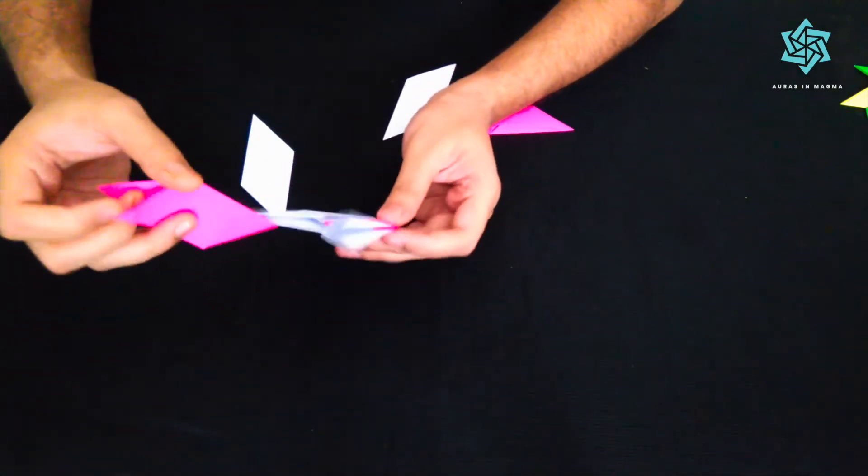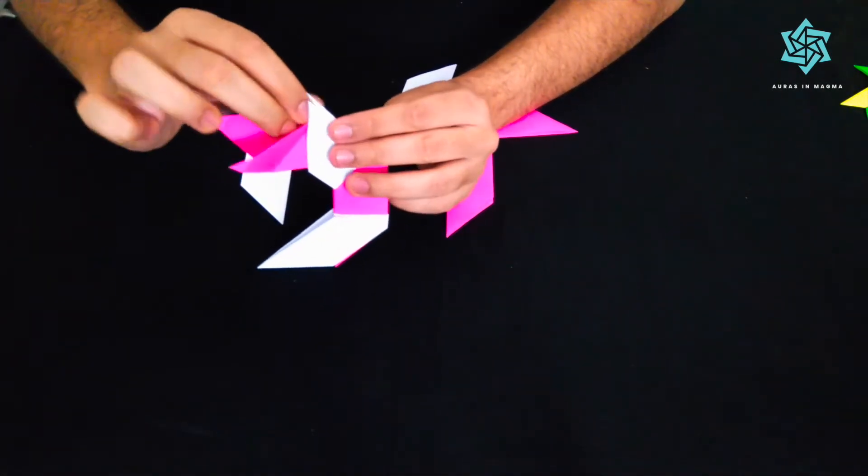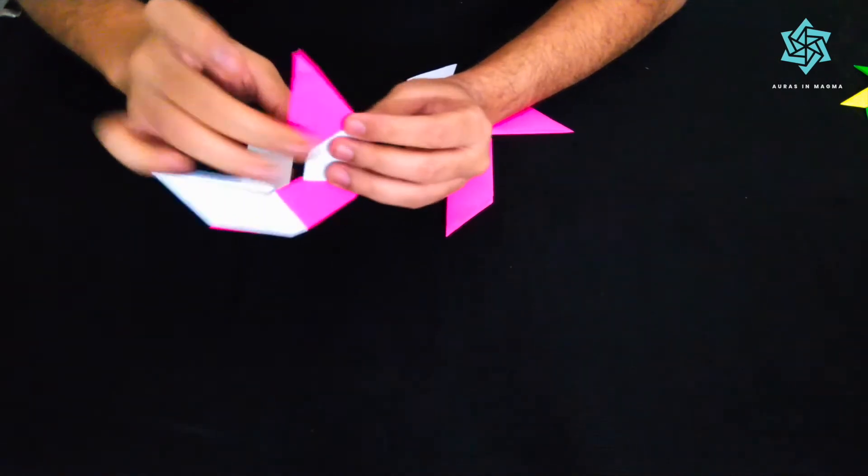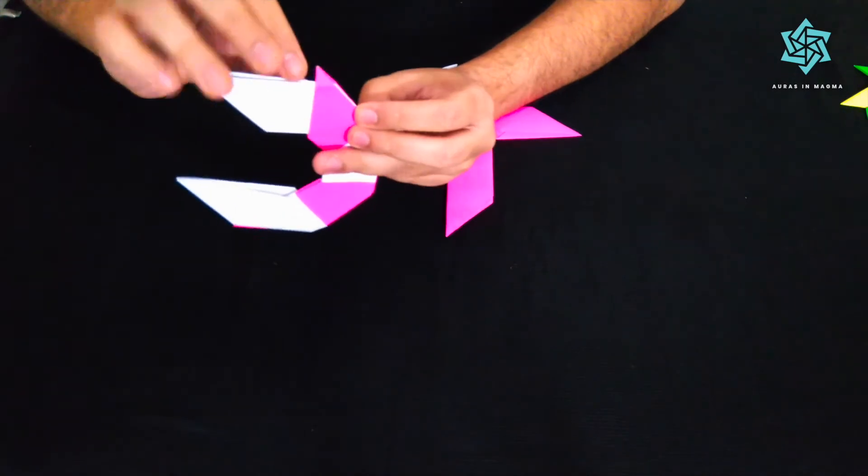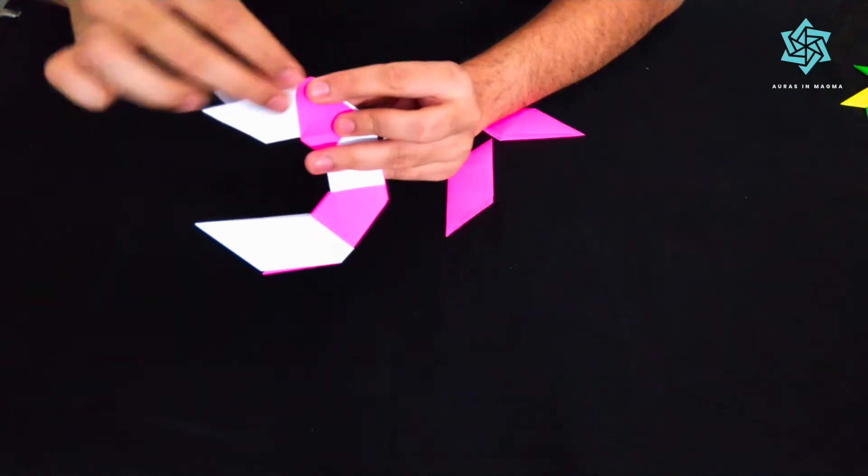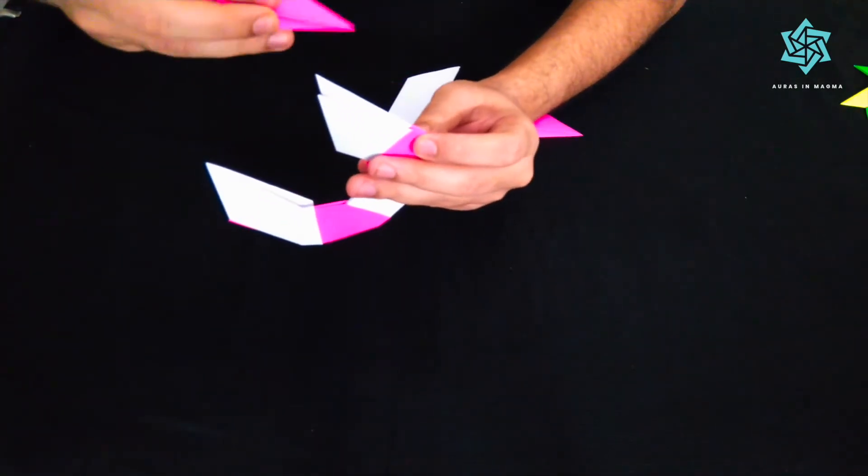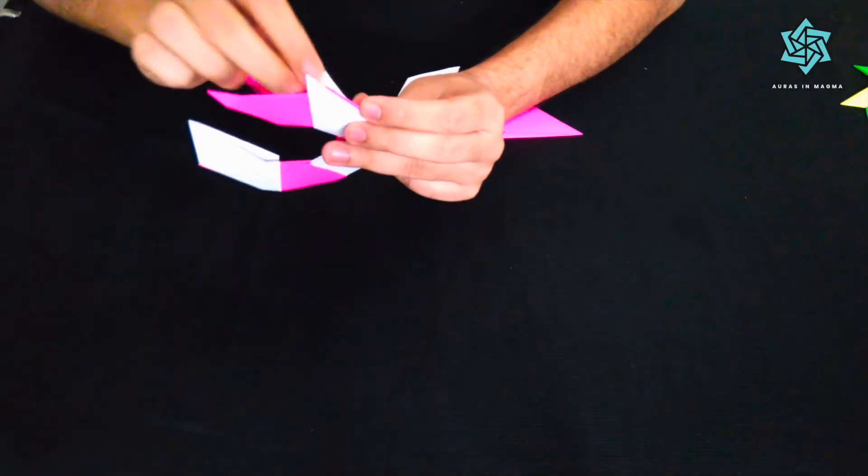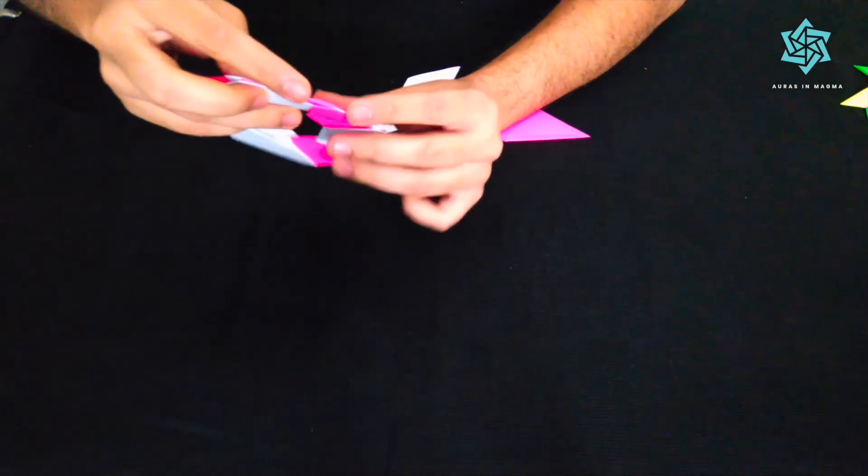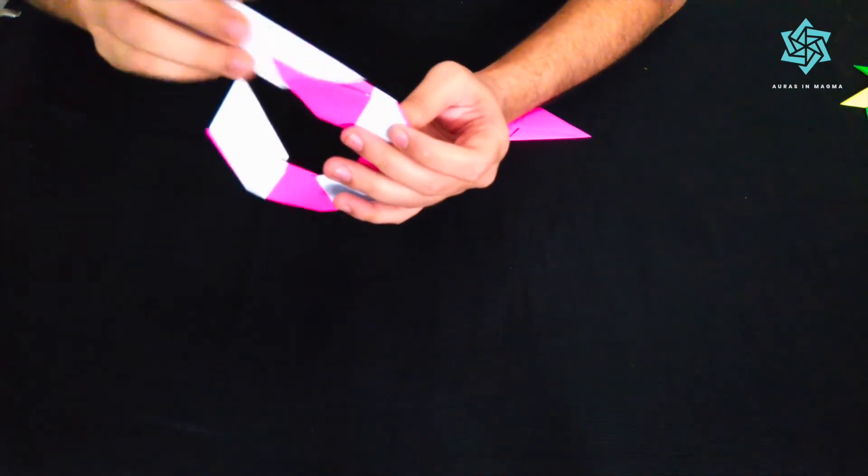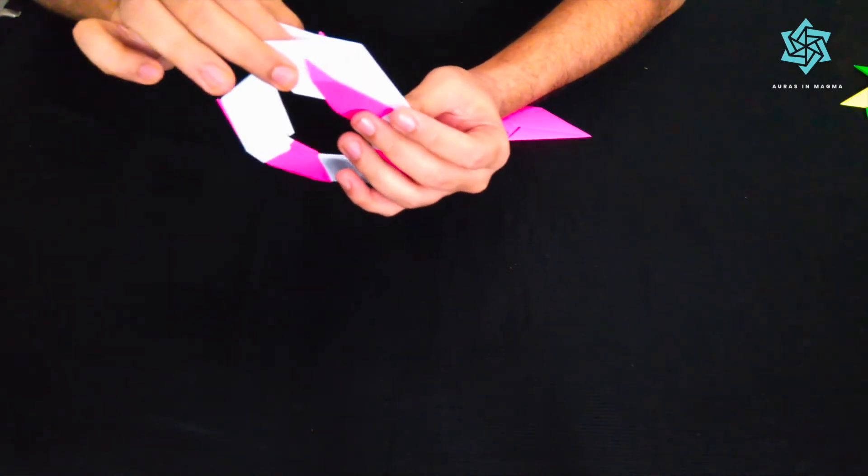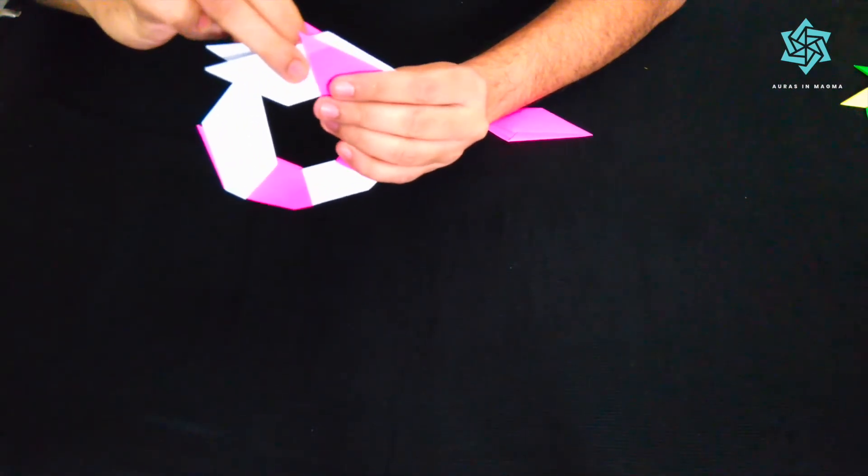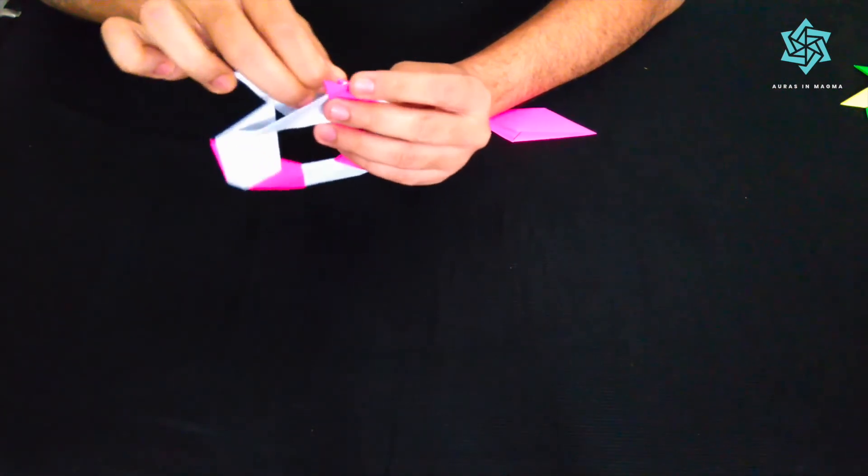So repeat with the pink, and now repeat with the white, pink again. So see these folds if they are precise then it will be very easy to fold everything up very nicely.